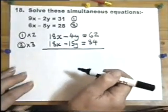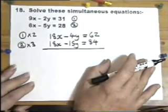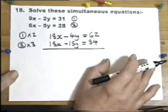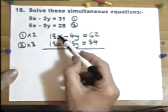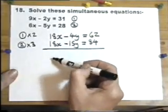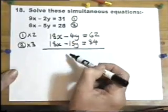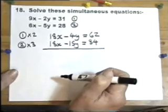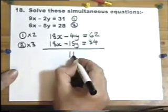Once you've made the two numbers the same, you either add or subtract, but you do have to think carefully. Is it add or is it subtract? There's no doubt at all when it's subtract you have to be so careful. What do you think of this? 18x minus 18x is 0. Minus 4y minus minus 15y is plus 11y.